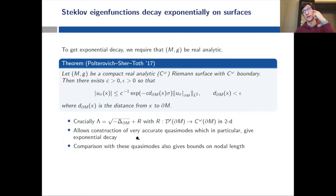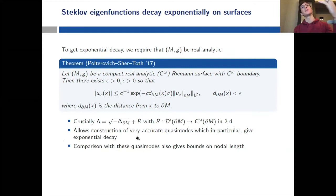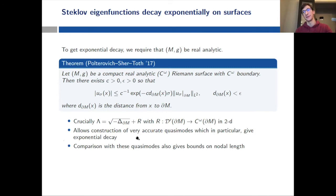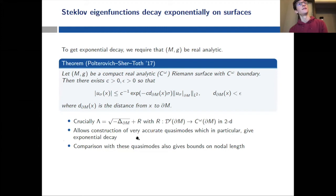Once you have the quasi-modes you can compare them with the real eigenfunctions and get bounds on the nodal length — which was actually the goal of that paper by Polterovich, Sher, and Toth. Unfortunately this type of proof can't work in higher dimensions, because you don't have as good an understanding of what the Dirichlet-to-Neumann map is there, and even if you knew it was the square root of the Laplacian, you don't know what the eigenfunctions of the Laplacian look like in higher dimensions.